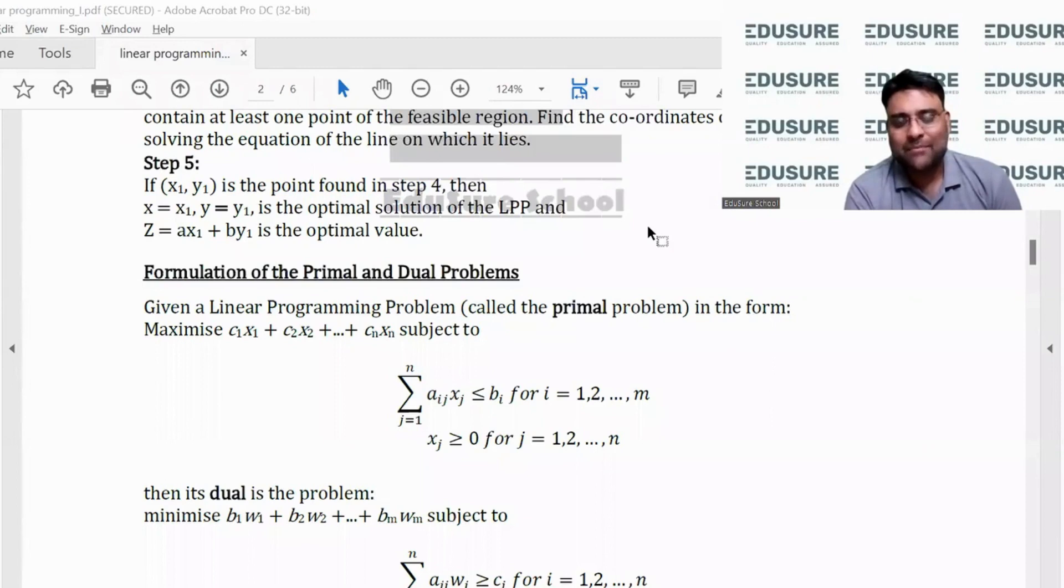So let's make an attempt at understanding how to find out the dual of a primal problem. If the primal problem is maximizing something subject to something less than equal to bi, the dual will take all these bi's in the objective function and all these c1, c2, cn in the constraints.